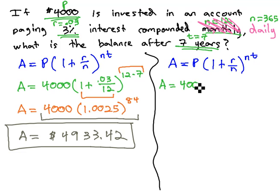So the principal is still 4,000 times 1 plus r, which is still .03 over n, which is now 365 to the nt. 365 times the number of years, which is 7.